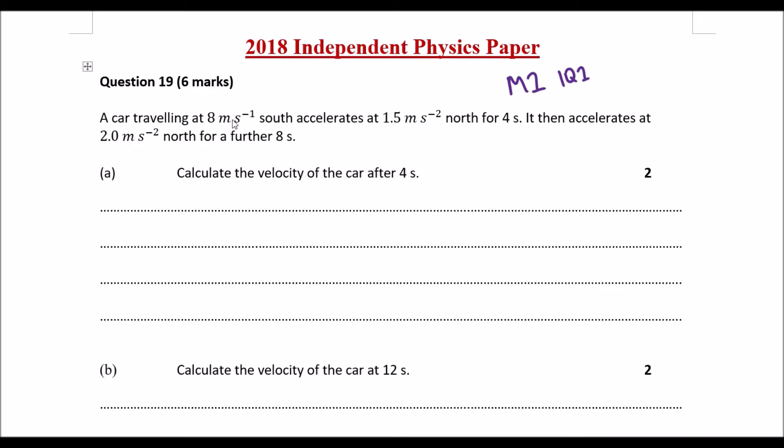Now we have a car that's moving at 8 meters per second south and accelerates at 1.5 meters per second squared north for 4 seconds. It then accelerates at 2 meters per second squared north for a further 8 seconds. Let's just start by highlighting the key numbers. So we go south, accelerates north for 4 seconds, and then we also have another acceleration for 8 seconds.